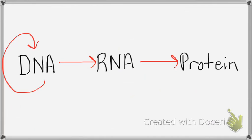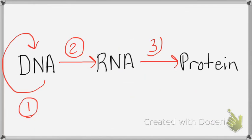Looking at this diagram: arrow number one is replication, arrow number two is transcription, and arrow number three is translation. Earlier I put 'amino acid sequence' there, but now I have the word 'protein' — because that's what proteins are made out of.